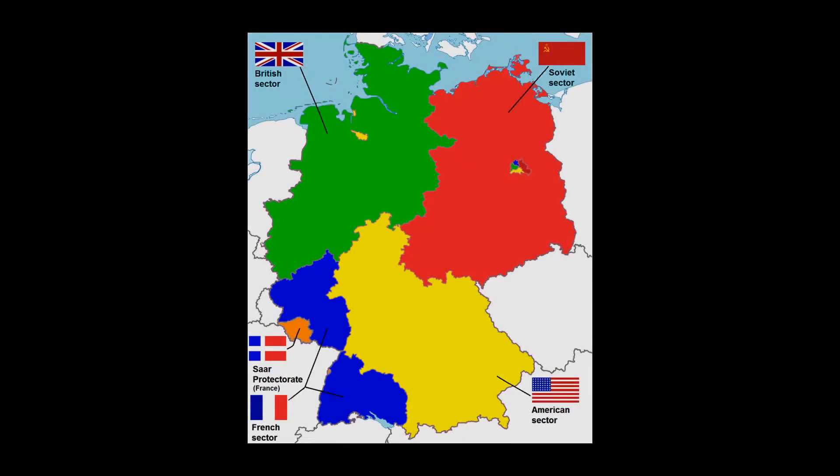One of the major results of this meeting was that all three leaders ratified an agreement setting the boundaries of post-war occupation zones for Germany. There would be three zones of occupation, one for each of the three principal allies. They also later agreed to give France a zone of occupation, but Stalin required that it be carved out of the U.S. and British zones. Stalin agreed to enter the fight against the Empire of Japan two or three months after Germany surrendered, though the Soviet Union would receive a number of concessions in the Far East.